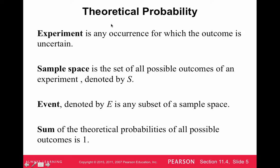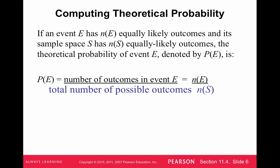A sample space for flipping coins is just S equals heads and tails. An event E could be just getting a head. The sum of all the theoretical probabilities of all possible outcomes always adds up to 1. This is a rule of probabilities that helps us find the probability of certain events.